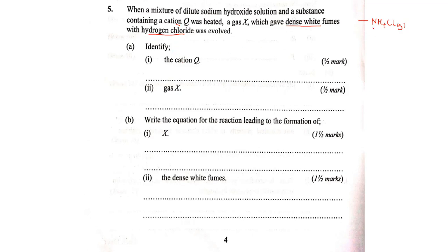For you to form these dense white fumes, you must combine hydrogen chloride with ammonia gas. So how can we produce ammonia gas? That means our gas X is ammonia. To produce ammonia gas, we prepare it with the help of a hydroxide. Usually in the lab, we prepare ammonia gas by reacting an alkali with a salt of ammonia, an ammonium salt.